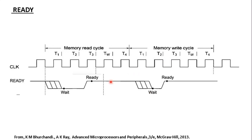The Ready signal is given by a device that is ready for a memory read or write operation. Initially at T1 and T2 when the CPU is getting ready, the devices may not be ready, but by the start of T3 the devices get ready and assert the Ready signal, as indicated in write cycle 2.